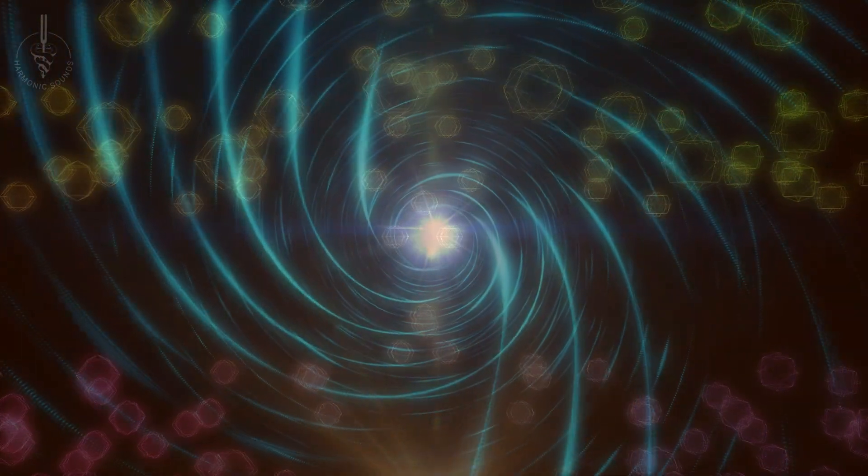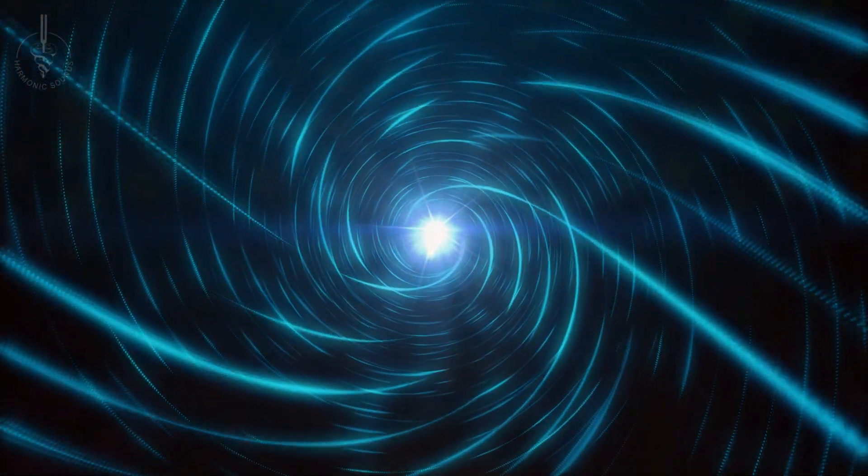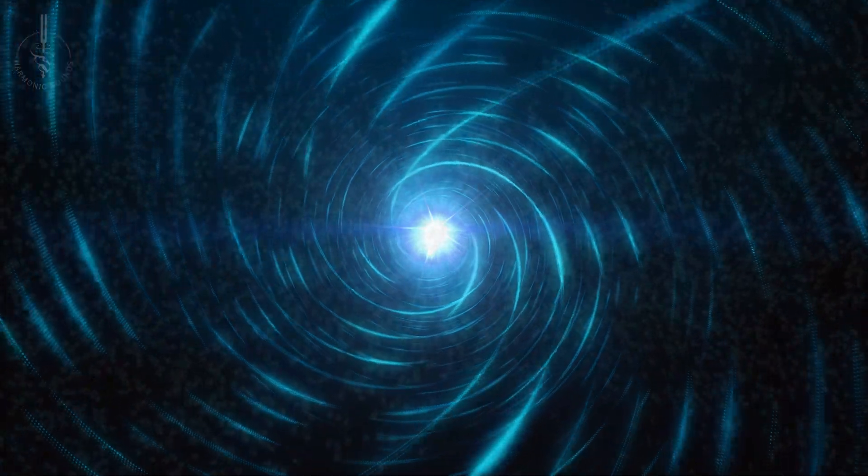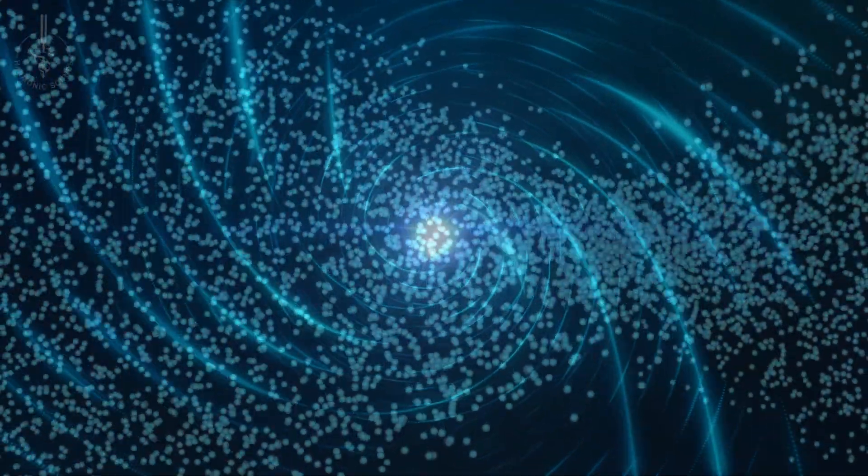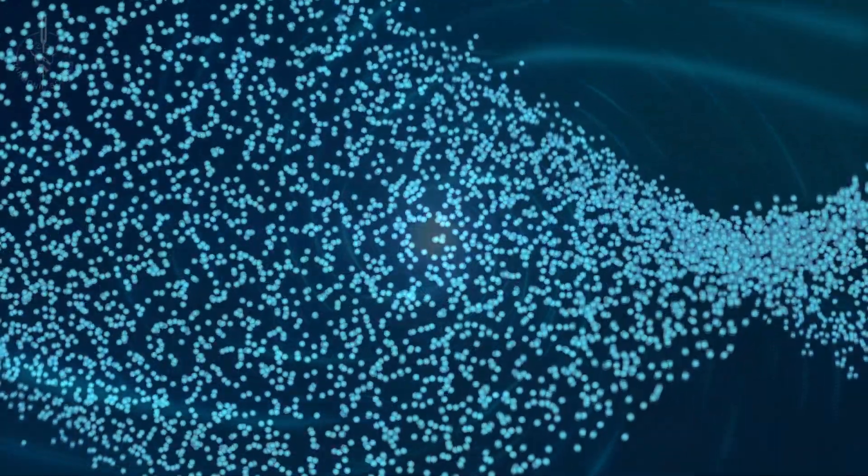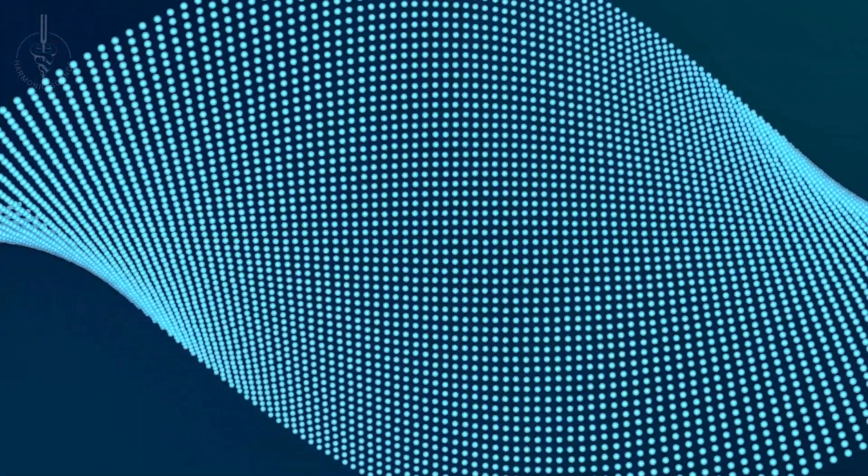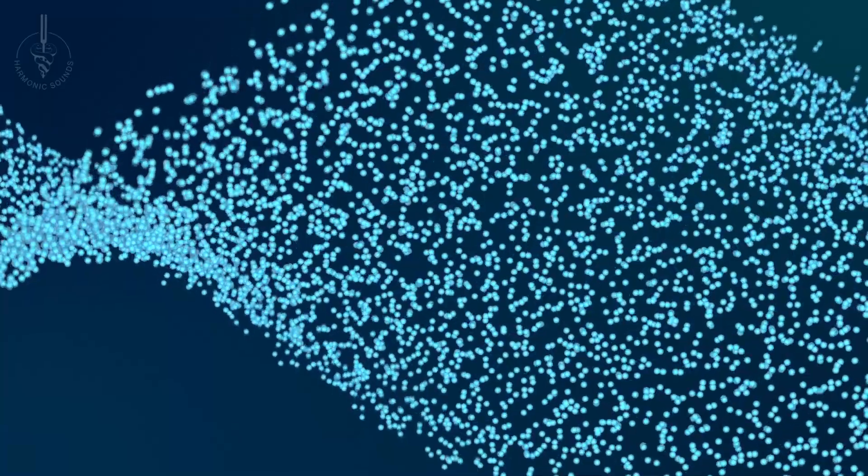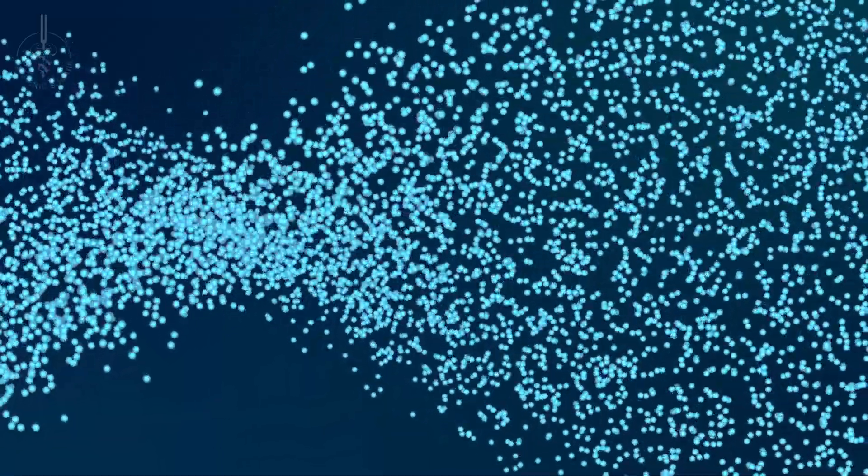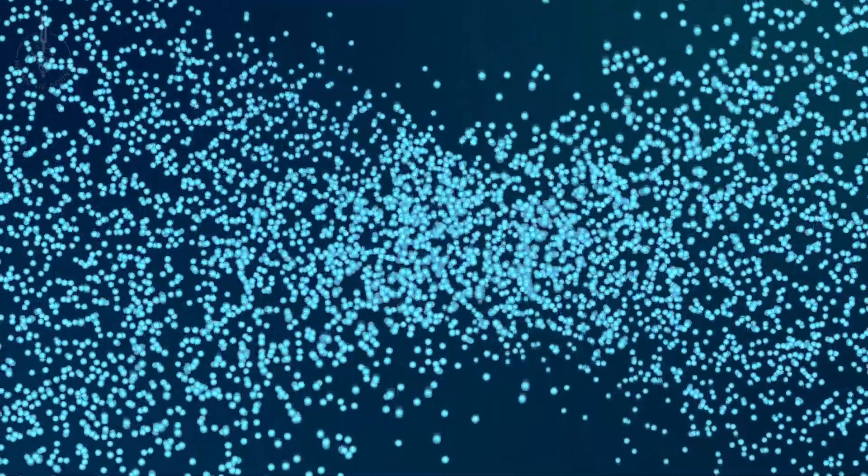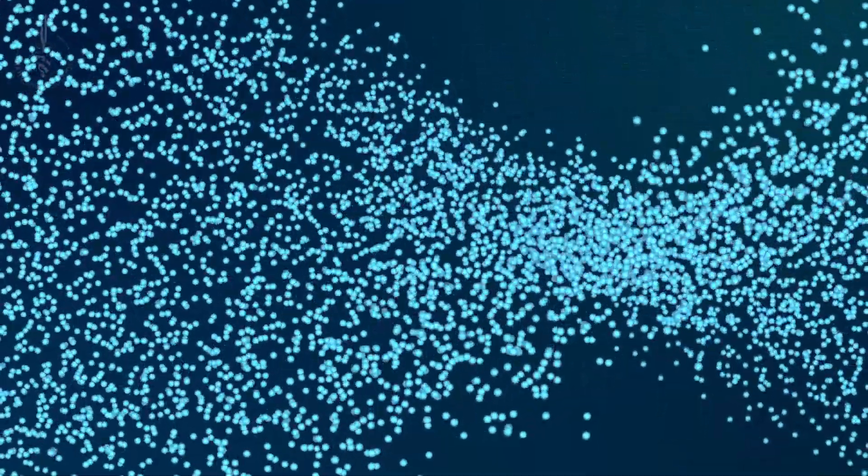The spinning motion of the electrons initiates a pulse, which creates a wave, and this wave we perceive with our human perception as form or physical matter. Whenever pulse, wave, and form are present, there is sound. This has been called the law of the three.